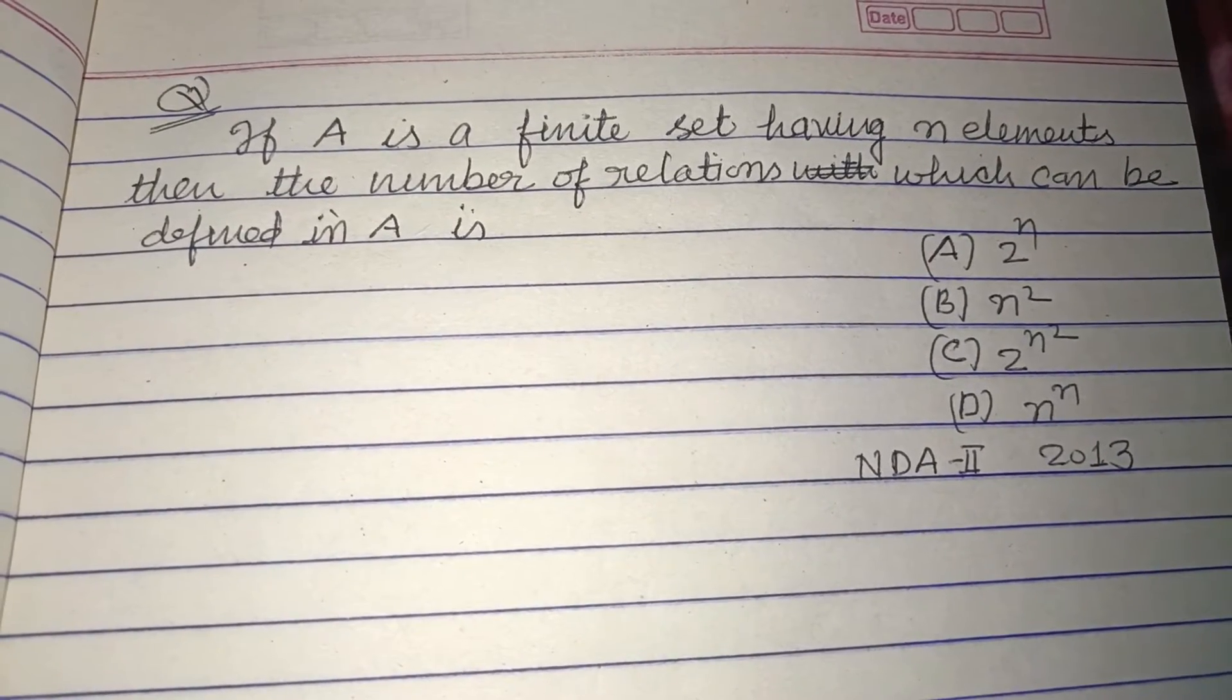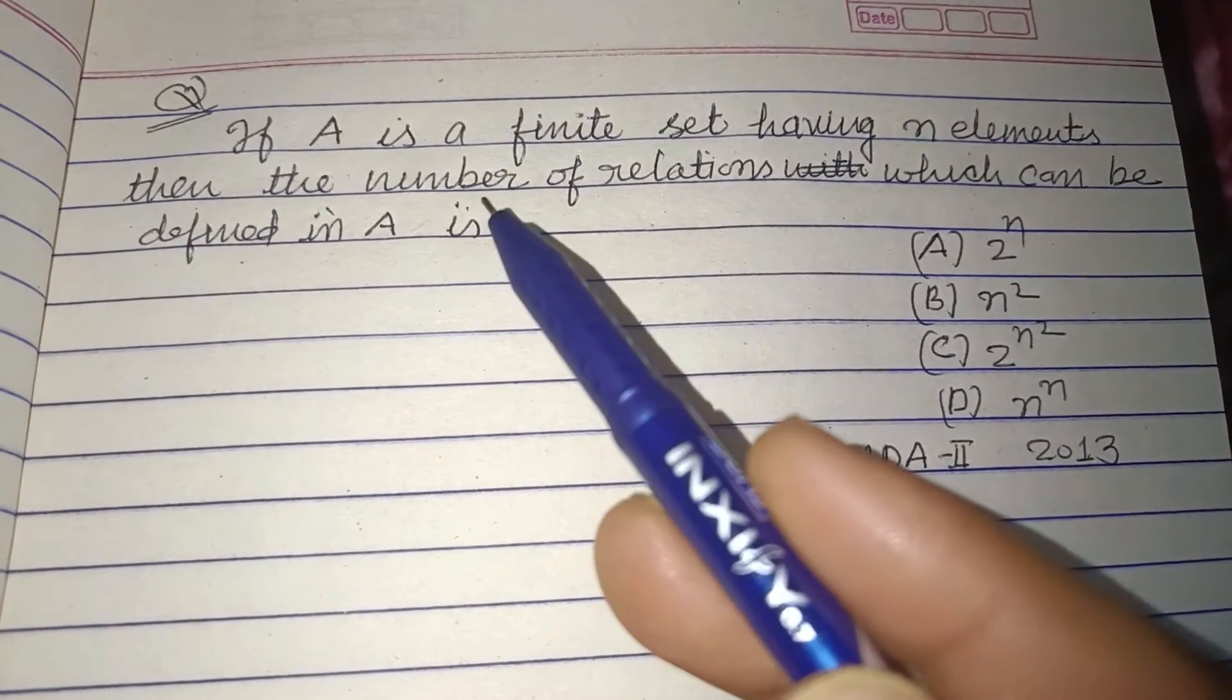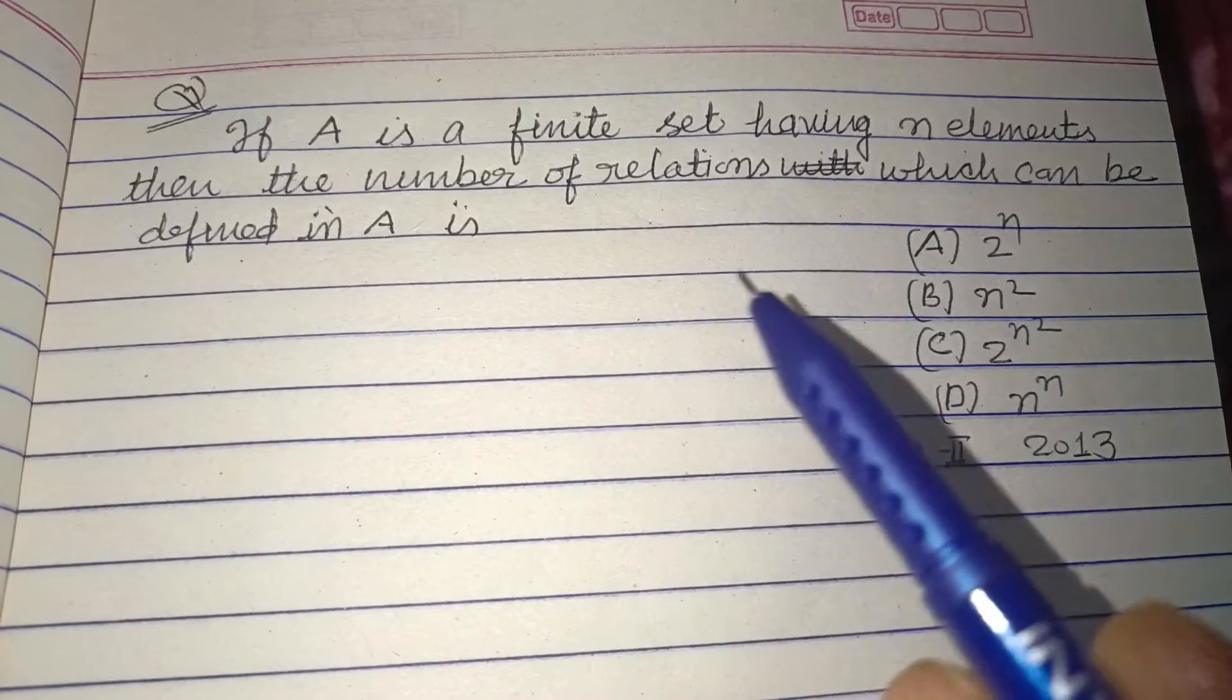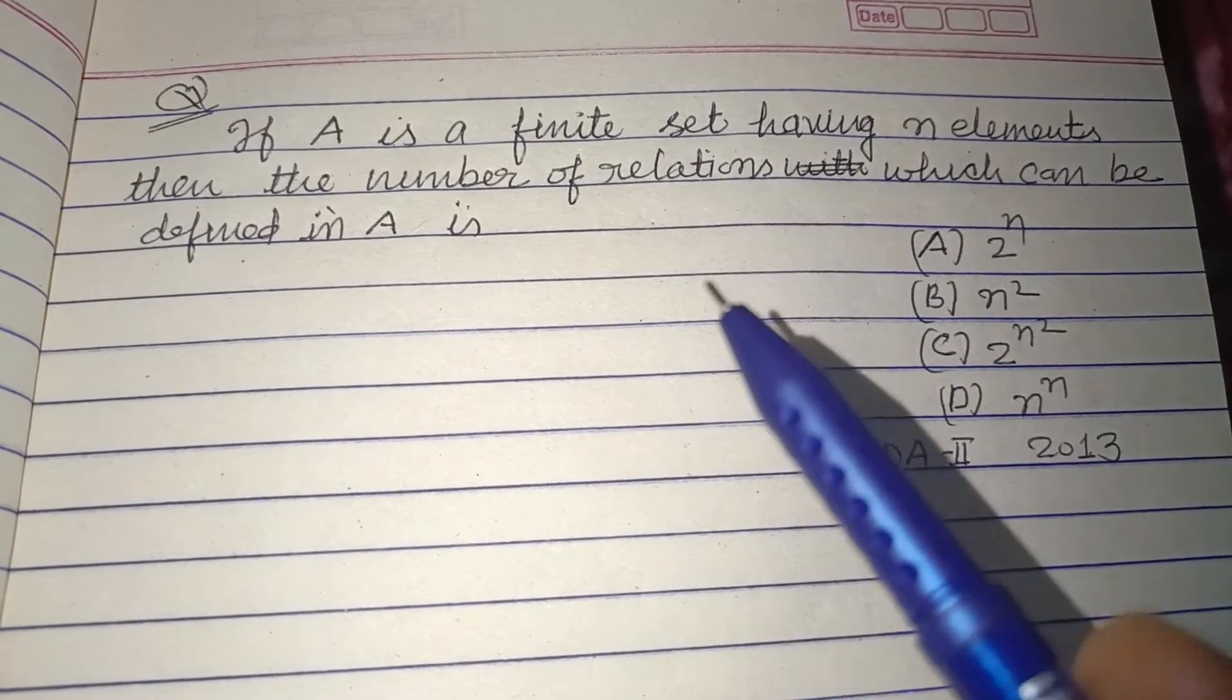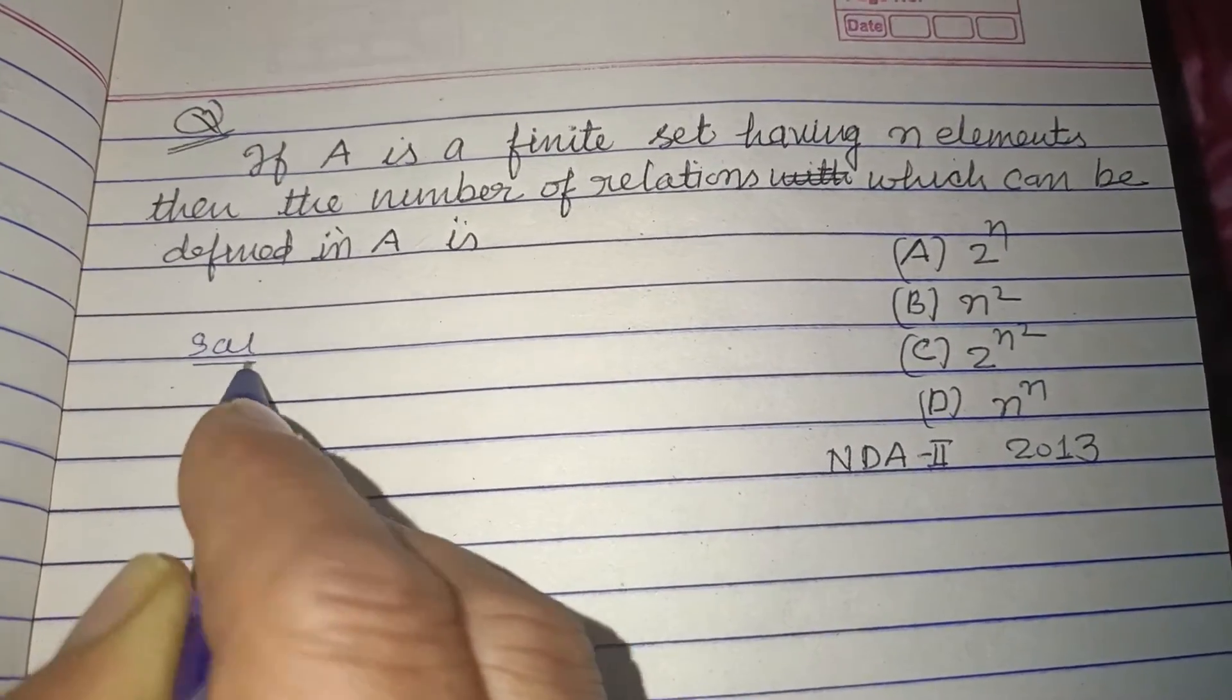Hello viewers, warm welcome to this YouTube channel. Question from NDA 2nd 2013: If A is a finite set having n elements, then the number of relations which can be defined in A is. So students, first we know the